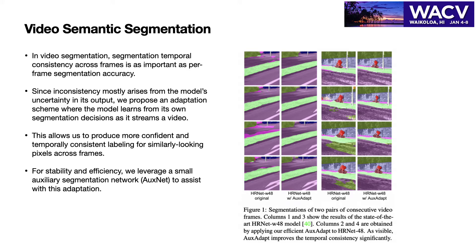Take a look at the right-hand side of the figure. The baseline segmentation model, HRLat W48, produced pretty good per-frame segmentation. But when we look at the results over time, there are quite a lot of segmentation inconsistencies.